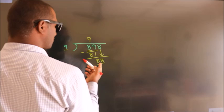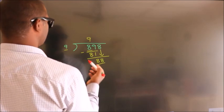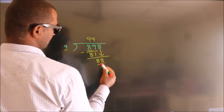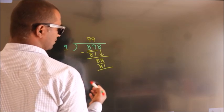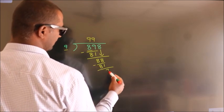A number close to 88 in 9 table is nine 9's are 81. Now we subtract, we get 7.